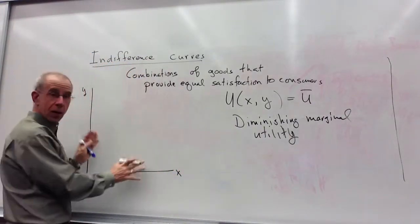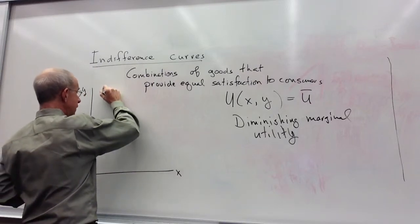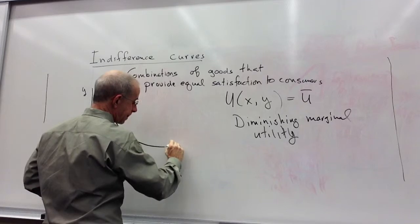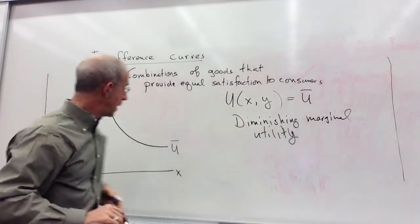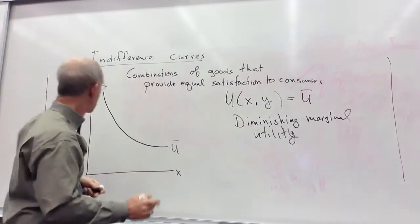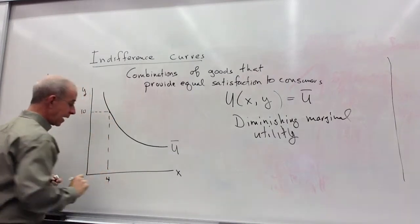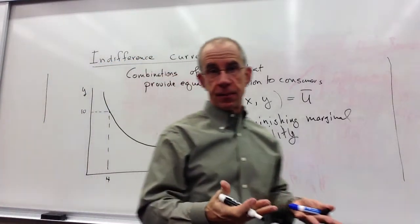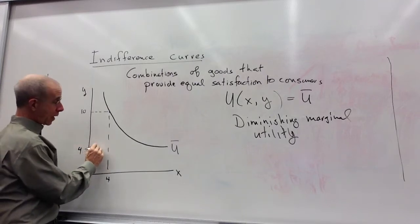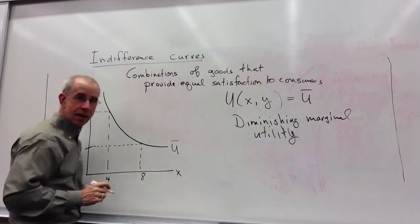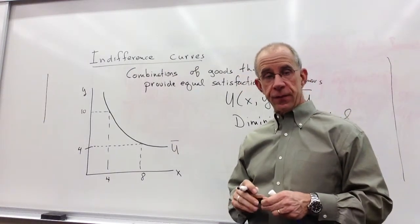I'm going to depict this indifference curve on a graph with y, consumption of y on one axis, consumption of x on the other axis. This is the level of target utility, and different combinations of y and x that will give you that level. For example, we might consume 10 units of y and 4 units of x, or only 4 units of y and 8 units of x.